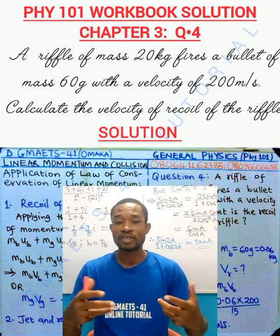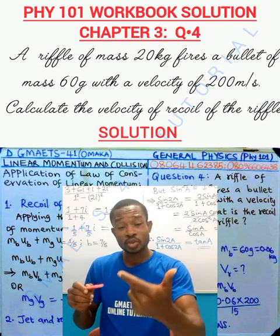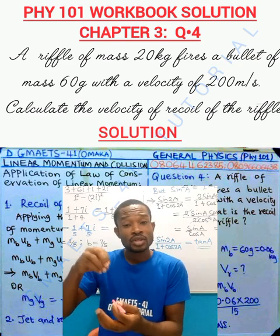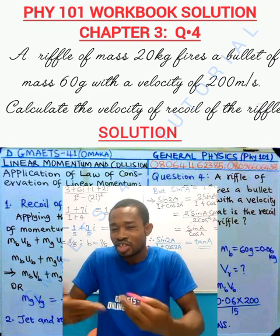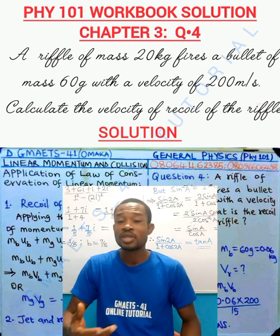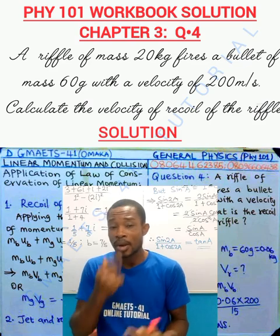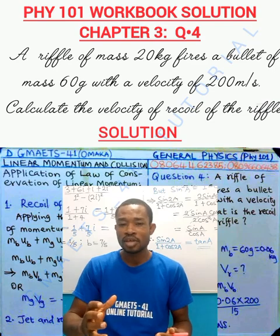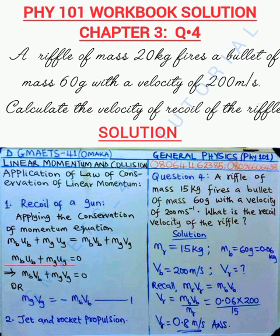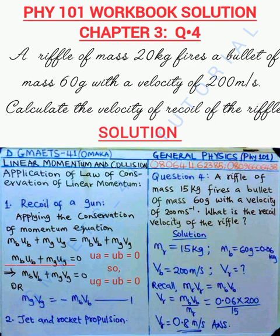In the recoil of a gun, you have the rifle and the bullet inside. At the initial point there is no movement, which means the initial velocity of both the gun and the bullet is equal to zero. If the initial velocity is zero, applying the law of conservation of linear momentum, the sum of initial momentum will be zero, because UA and UB — the initial velocities of the rifle and bullet — are both zero. The gun-bullet system is at rest.